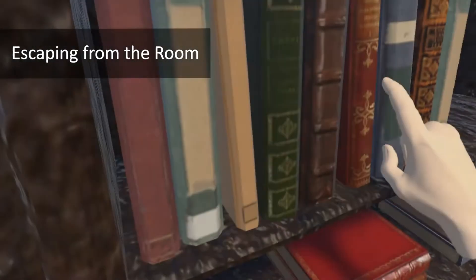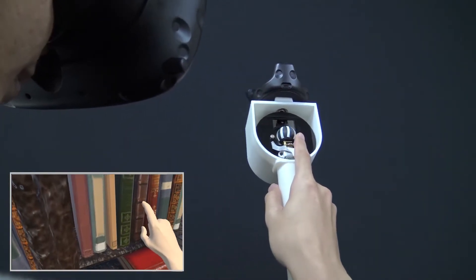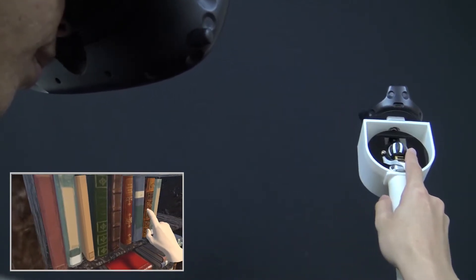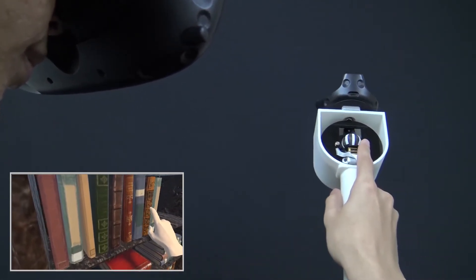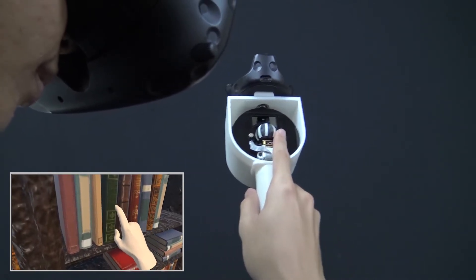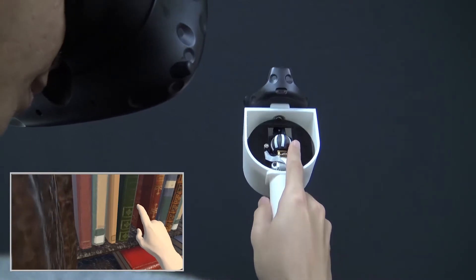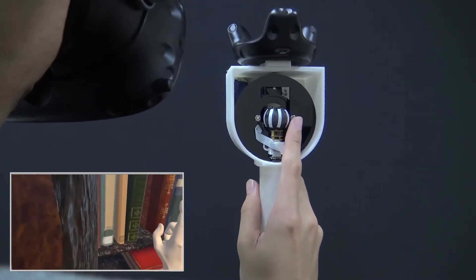The second application is escaping from the room. The user slides over books to find a secret book for opening the trapdoor. Bumpiness sensations will be created when the user's finger traverses gaps between each book cover. The user needs to find the most sticky book cover, push the book into the bookshelf and open the trapdoor.